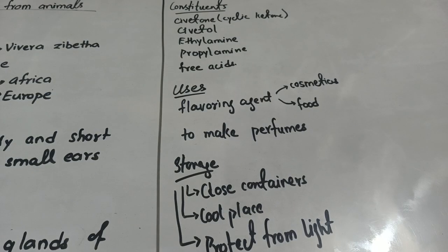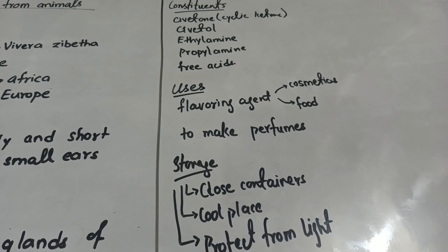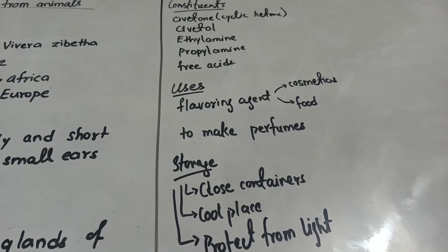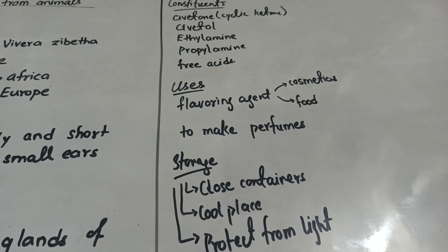Let's discuss the constituents of civet. It is composed of constituents like civetone, which is a cyclic ketone, along with ethylamine, propylamine, and some types of free acids.